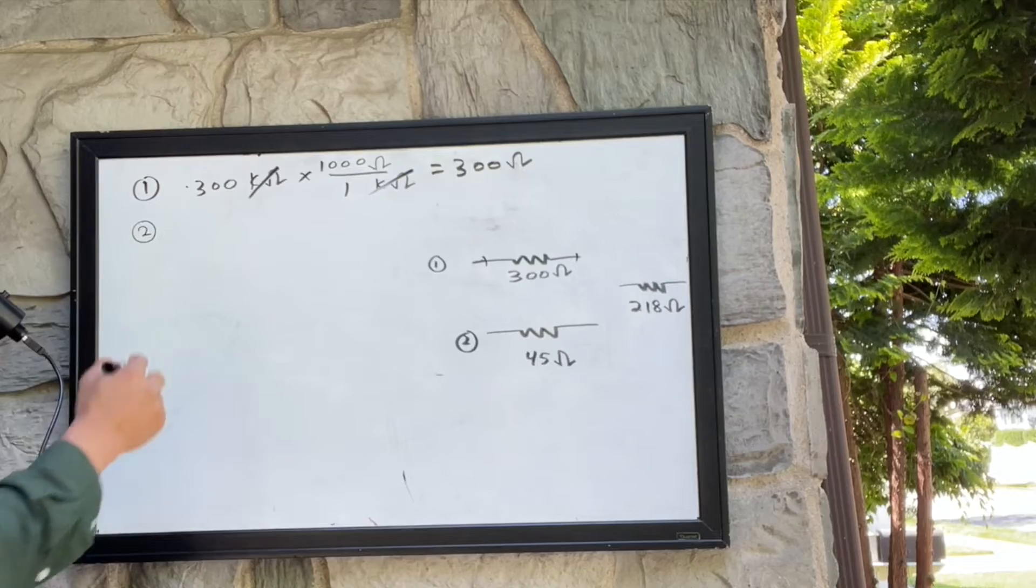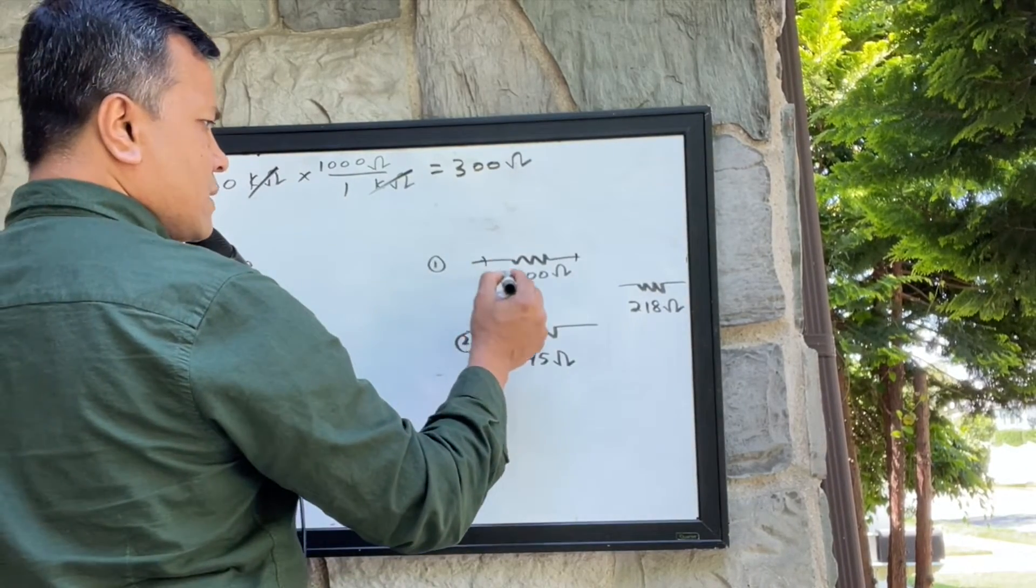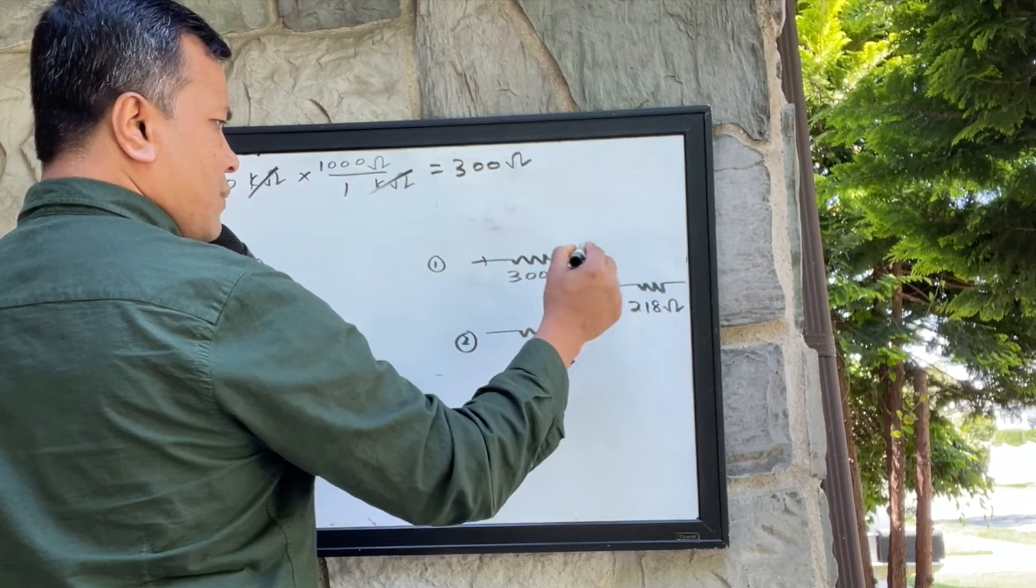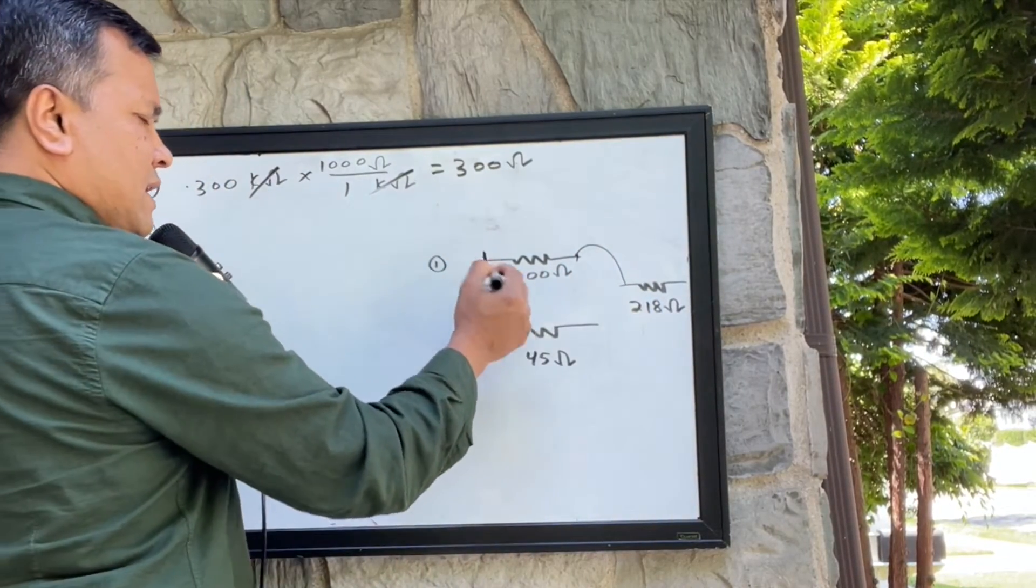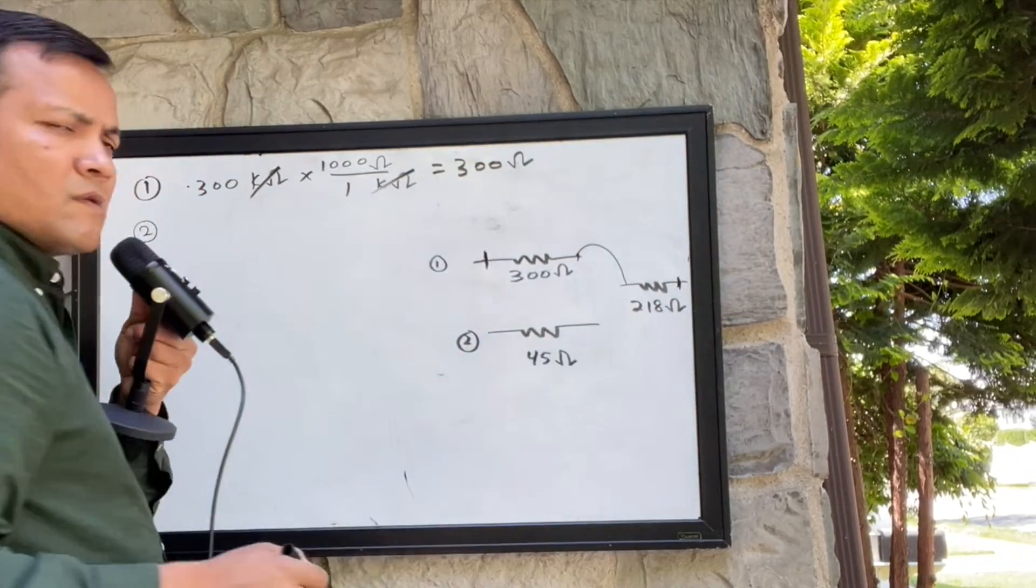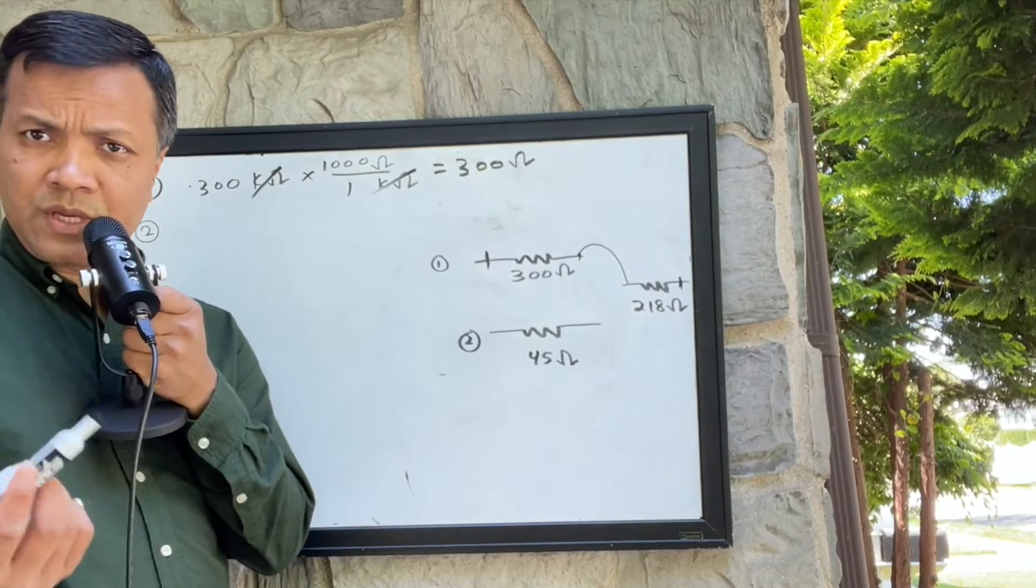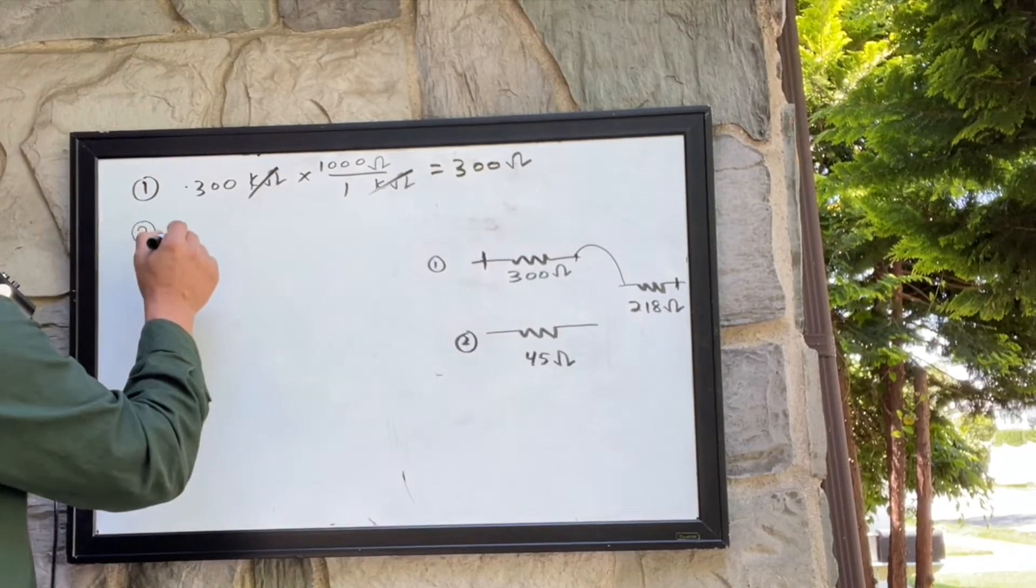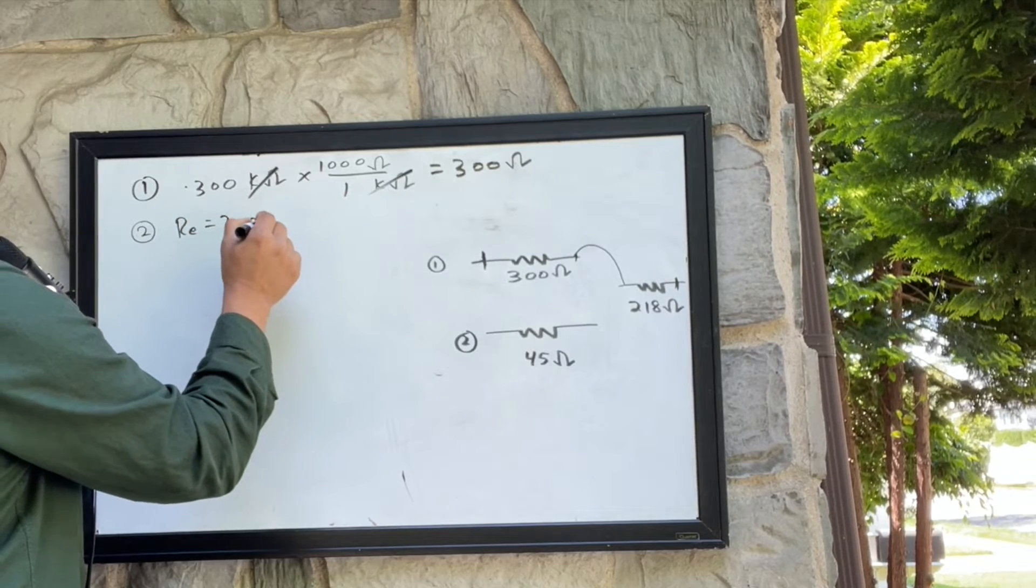Experiment number two I wanted to do is in series, so I wanted to put one end of the resistor attached with the other end of the resistor. You put the ammeter over here and you put the ammeter over here and so they will measure how much resistance. So equivalent resistance would be 300 ohms plus 218 ohms, so it's gonna be 518 ohms.